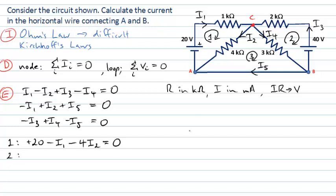For loop two, I'll also go clockwise, starting at the 40V source. I'm going from the high potential side to the low, so I lose 40 volts. Then through the 3 kΩ resistor in the opposite direction to I4, so I pick up 3 × I4. Then through the 2 kΩ resistor in the opposite direction to I3, gaining 2 × I3. Returning to the start: −40 + 3I4 + 2I3 = 0.